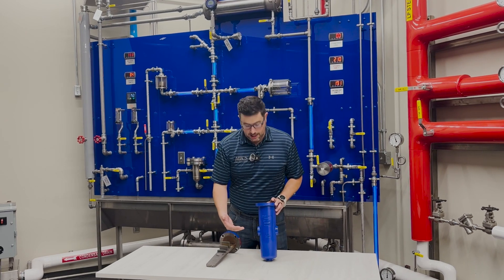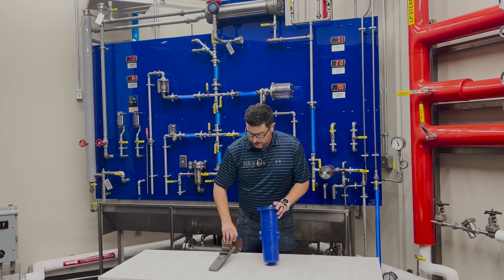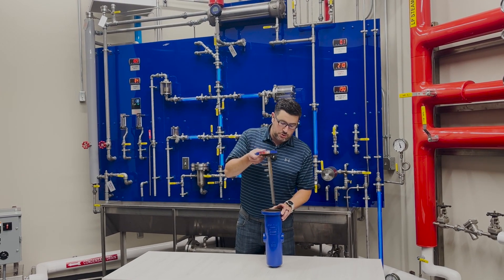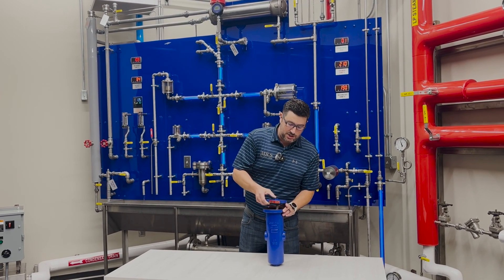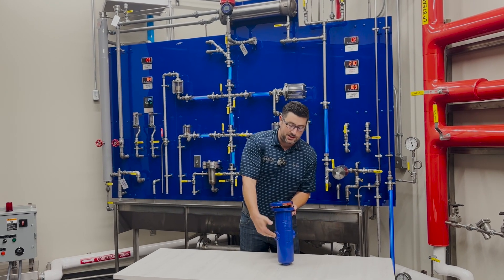As you can see here in our housing, we've got horizontal threaded connections coming in with flow direction going this way. This is the actual baffle piece that comes in. This is what it looks like. As you can see, it's coming into about halfway up this housing.